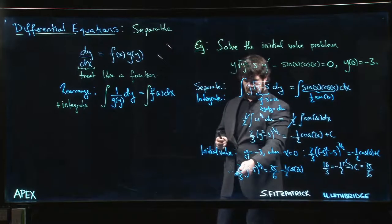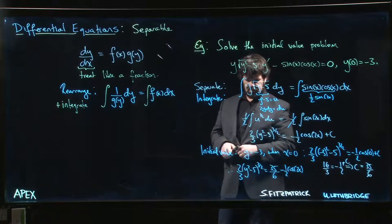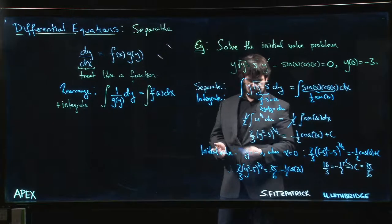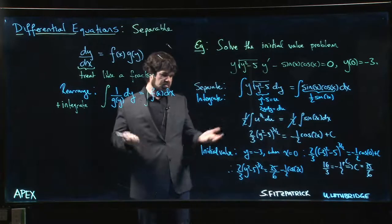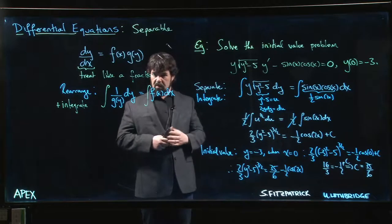Now if you wanted to, you could probably multiply both sides by say three over two, get rid of that coefficient out front. That would certainly clean things up a little bit for you. Maybe not mandatory, but it's something you could do.